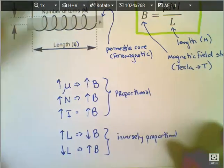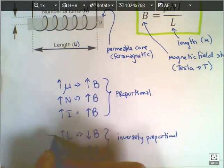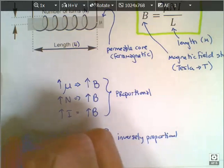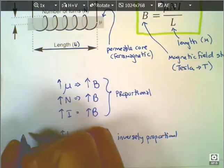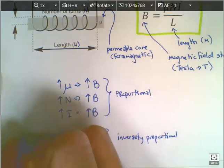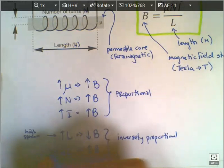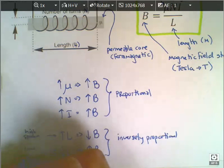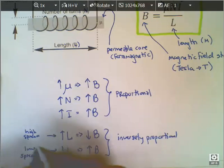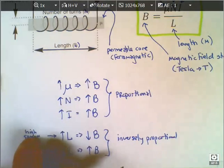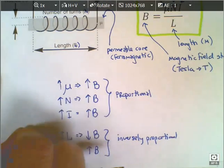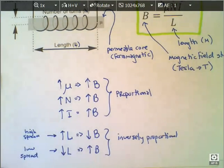Just to look at that a little further: if we increase L, what we mean is a widespread or high spread of the coils — spread them out away from each other. A low spread would be a high density of coils, all jam-packed together. High spread could be low density where you're spreading them out quite a bit.